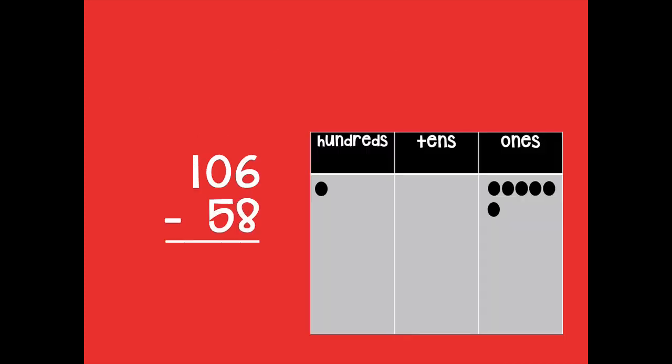All right friends, so here we have our first problem. I have modeled it on our place value chart for us already, so you can see that we have 106 minus 58, and I have modeled 106 on our place value chart. Again, remember we're not modeling 58 on our place value chart also, because we're subtracting that. If we were adding, then we would model both numbers on our place value chart, but subtracting only models the largest number.